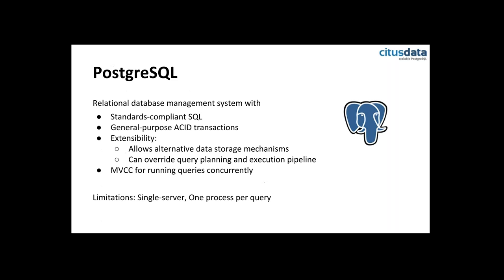I'm assuming everyone here is familiar with PostgreSQL. Two interesting features to highlight: it's very extensible — so extensible that you can overwrite the query planning and execution pipeline of PostgreSQL, which allows you to create completely new types of tables with separate execution and planning logic. We'll use that to do distributed execution. Another interesting feature is MVCC — Multi-Version Concurrency Control — which lets it run queries concurrently very efficiently. Each transaction looks at its own version of the database, and updates can run concurrently without affecting selects.